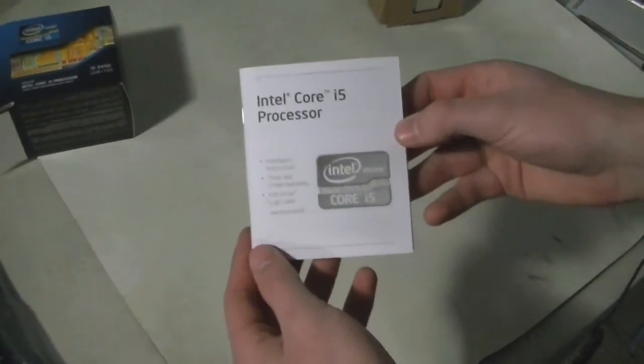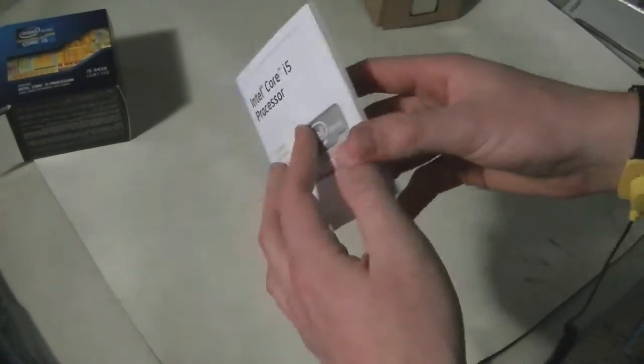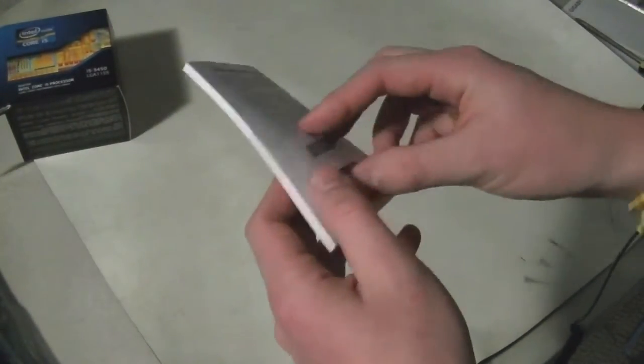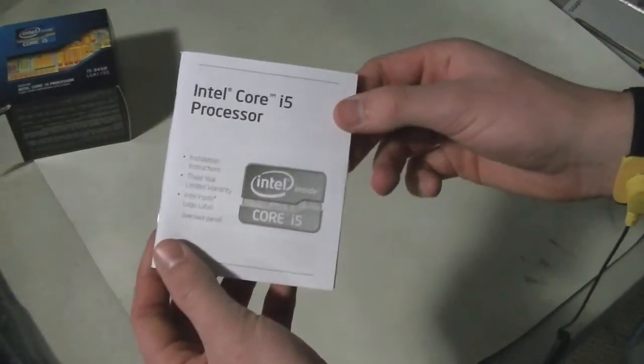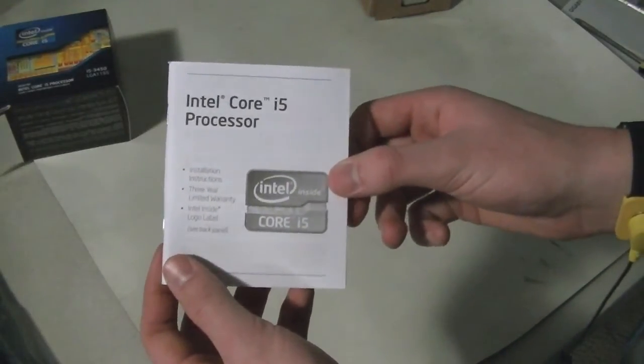Now, in the box, there's one thing left. We've got the user manual. It's going to be in a bunch of different languages, so it is awful thick, even with small type. It usually doesn't say a whole lot, because the CPUs are usually pretty straightforward.